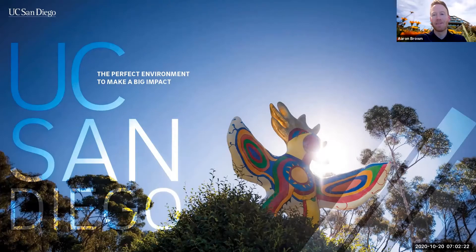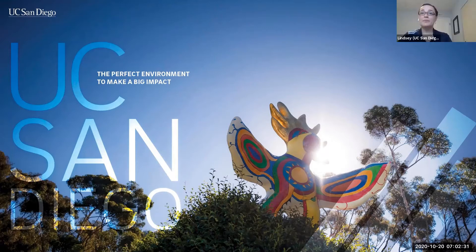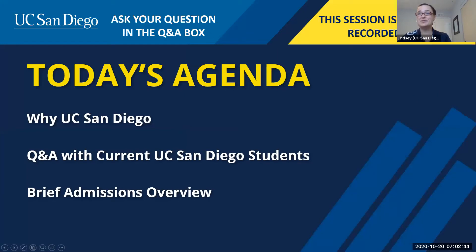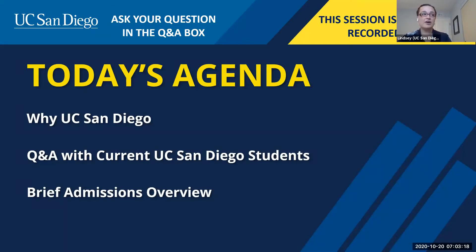My name is Aaron Brown and I'm Associate Director for Application Review. Aaron and I will be on the presentation today and are able to answer admissions questions. We're going to do a real quick video of why UC San Diego to give you an overview of what the campus looks like, about one minute long, and then we're going to go right into our student panel where our panelists are going to answer all your questions. We encourage you to submit those questions using the Q&A feature in Zoom webinar. At the end, Aaron will do a brief admissions overview and we can answer those questions too.